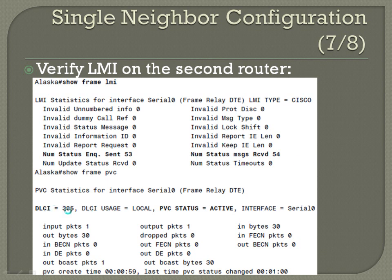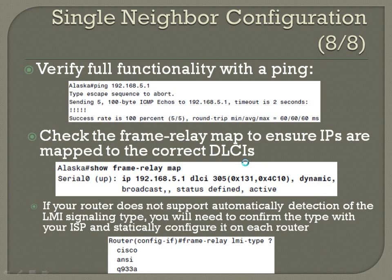You can confirm DLCI 305 is now active. Verify full functionality with a ping — from Alaska, ping the other router's WAN IP 192.168.5.1, and you can see it goes through successfully. Also check the frame relay map with 'show frame-relay map' — you can see IP 192.168.5.1 is mapped to DLCI 305, and the status shows as active.